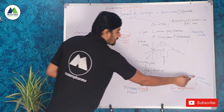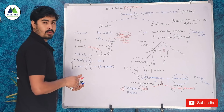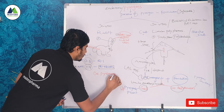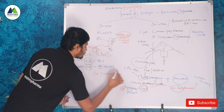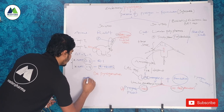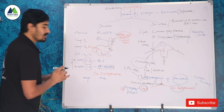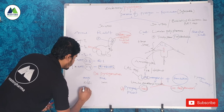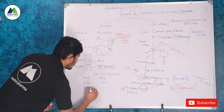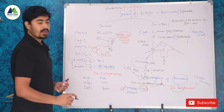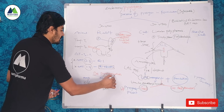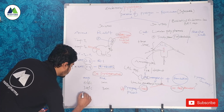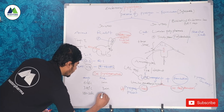If pyrogens are present in the formulation, we need to perform depyrogenation before developing the formulation. Depyrogenation is done using temperature and time. The conditions are: 640°C for 1 minute, or 320°C for 3 minutes to depyrogenate containers used for formulation. Alternatively, 180 to 210°C for 4 hours can also be used for depyrogenation.